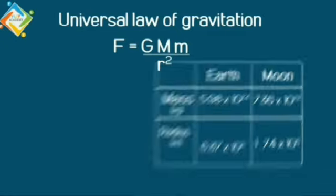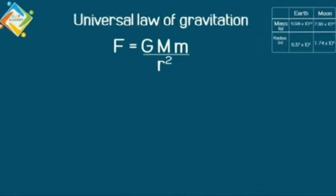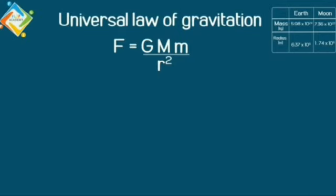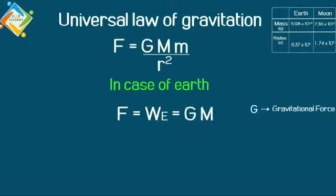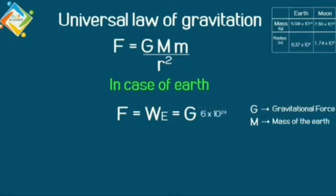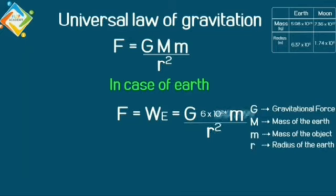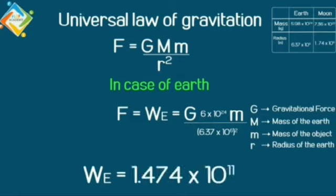Now, we shall see what will be the force of gravitation given by Earth on an object having mass M. With the help of Universal Law of Gravitation, we can take case 1 as the force of attraction given by Earth on that specific object having mass M. So, F equals WE, weight of the object in Earth, equal to GMm by R square, where G is a gravitational constant. M is the mass of the Earth can be written as 5.98 into 10 raised to 24. So, it can be approximately written as 6 into 10 raised to 24 into M divided by R square. That is 6.37 into 10 raised to 6 whole square. After calculations, you will get the answer for WE as 1.474 into 10 raised to 11 G into M.